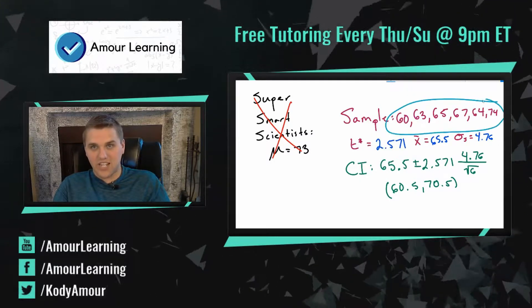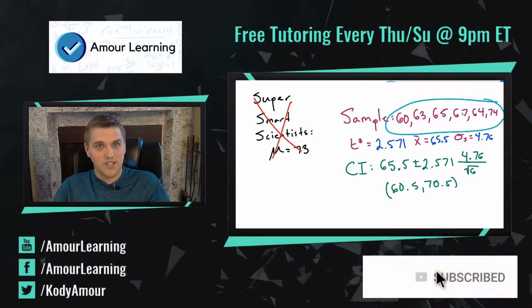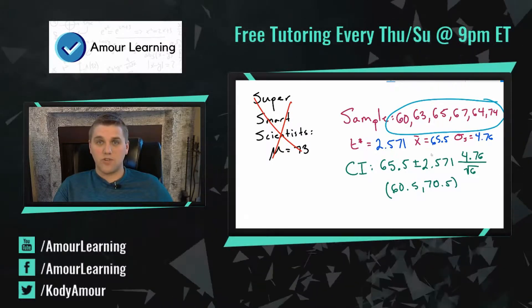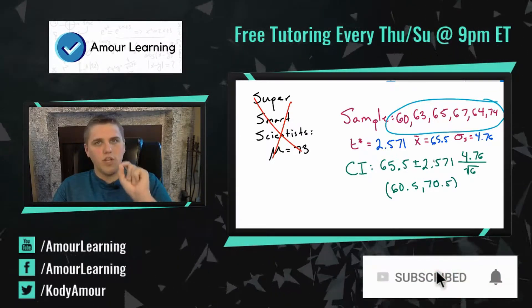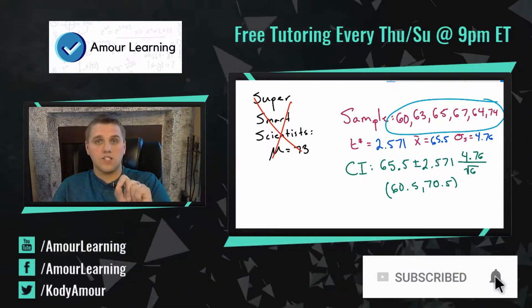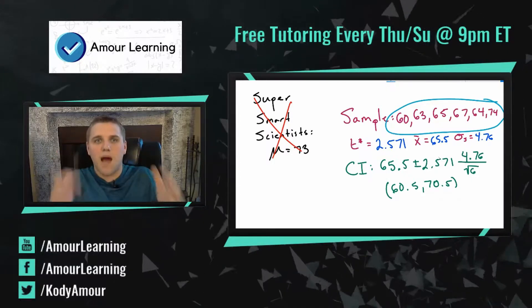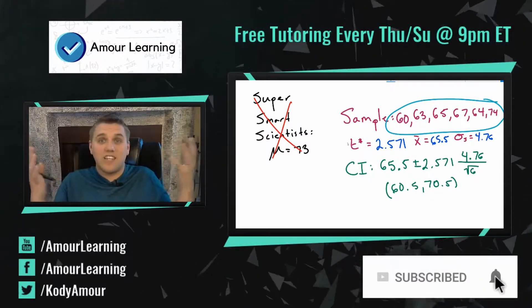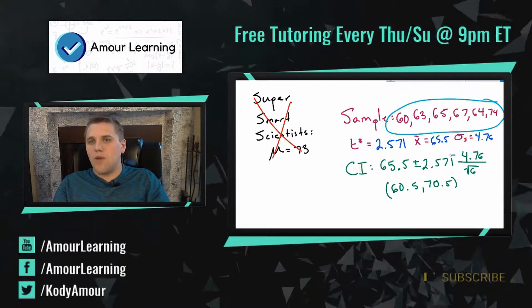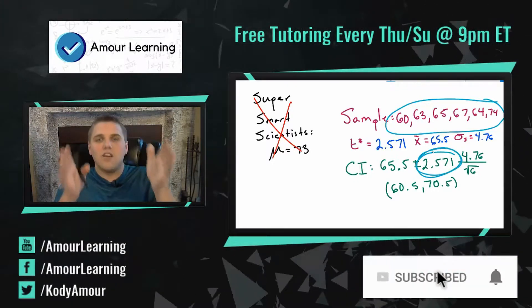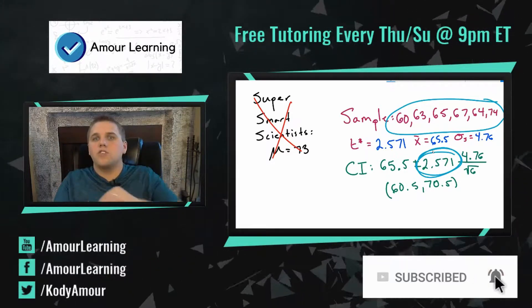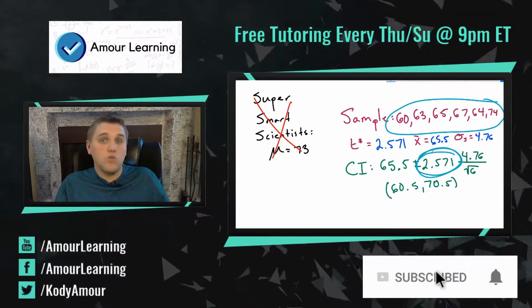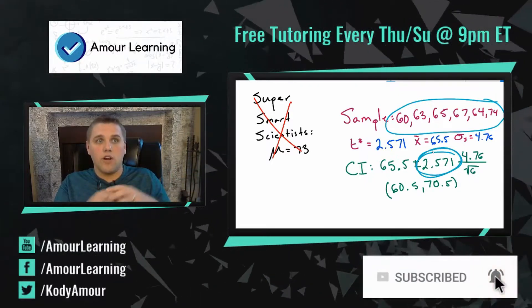You might be asking: wait, your sample size is only six — that's really small, how can you publish such a study and say the super smart scientists are wrong? This is a really good question. So long as my sample is representative of the same population the scientists are talking about and I did a random sample, technically the sample size doesn't matter. That's because of the T* value — that's why using t-tests is so much better than using a z-test, because the t-test makes the assumption that you can use small sample sizes.